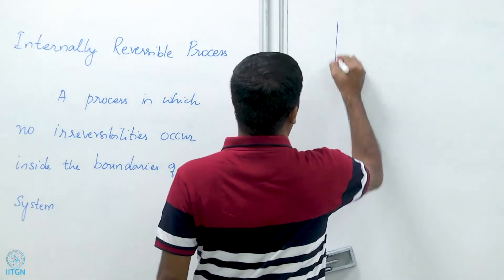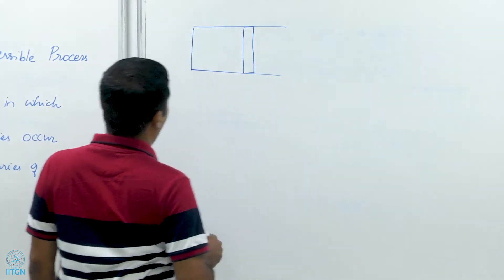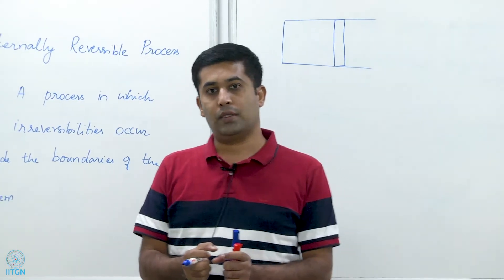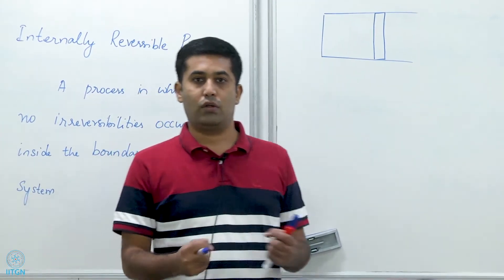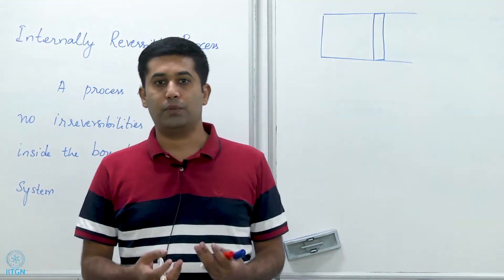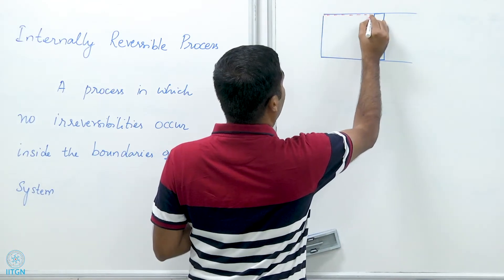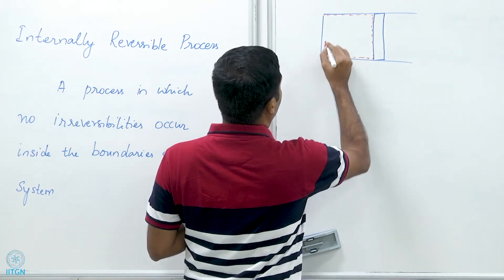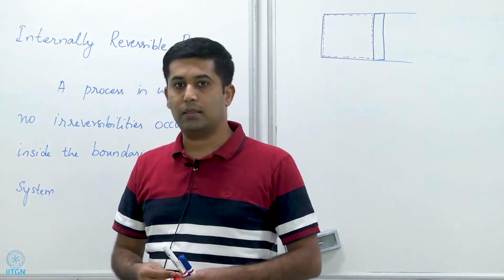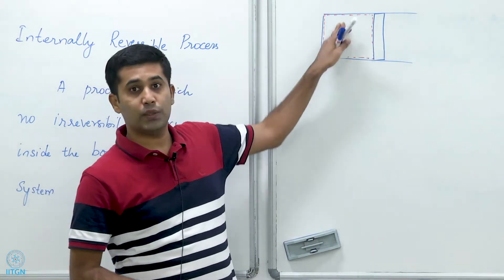Let us see an example. Say I have a piston-cylinder device. Because the piston needs to be gas tight, there is a normal reaction between the piston and the cylinder since it is a press fit — a tight fit. When there is a normal reaction you expect there will be friction. So there is friction between the piston and the cylinder. But if I define my system using the dashed line here, and supposing I am able to extract or supply heat to the system without any temperature gradients within the system.